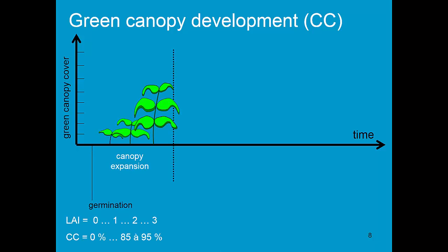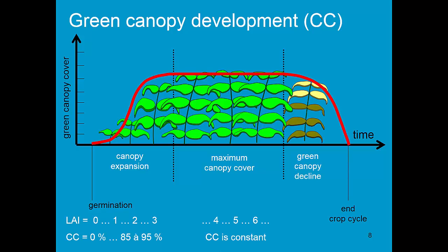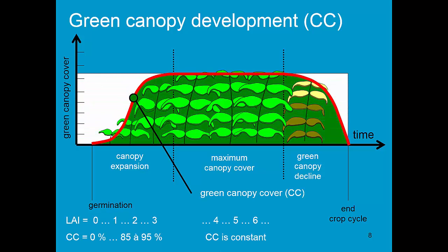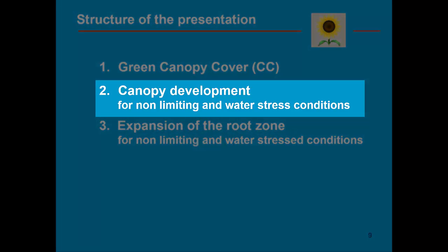The green canopy development is 0 at germination, as is leaf area index. Then we have the canopy expansion; leaf area increases up to 3 or 4. Then in the mid-season, the canopy cover remains constant while the leaf area index further increases. In the late-season stage, we have a green canopy decline. In this section of the training module, let's have a look at the canopy development for non-limiting and water stress conditions.